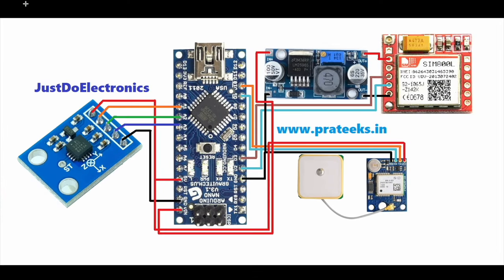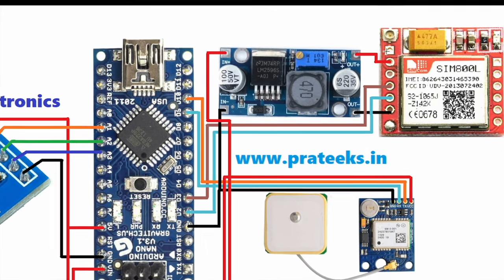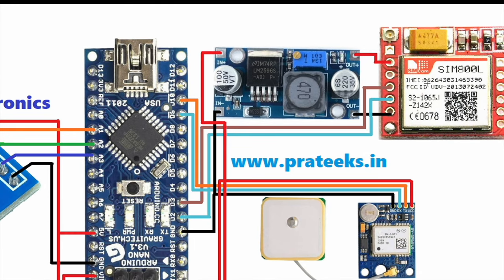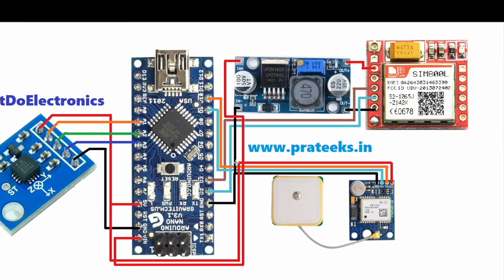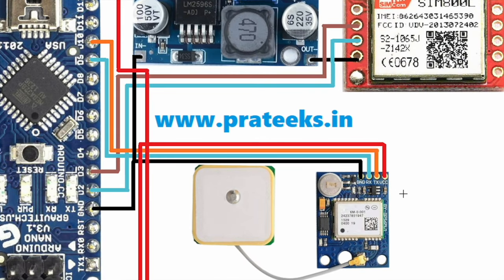This is the circuit diagram. Here I use the GSM module SIM800L, and I use an LM2596 step-down converter because the GSM requires 3.7 volts. I also use the NEO-6M GPS module, which works on 5 volts, connected to pin numbers 9 and 10.